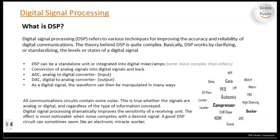DSP functionality converts analog inputs — microphones, music sources — though sometimes it's fully digital. Eventually the signal goes from analog to digital and back from digital to analog on the speaker side. That analog-to-digital and digital-to-analog conversion is generally considered the weak point of digital signal processing.